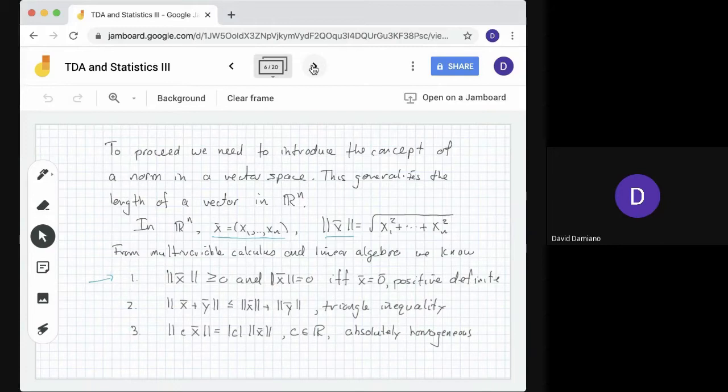From multivariable calculus and linear algebra, this length function satisfies three properties: it's always ≥ 0 and equals zero if and only if x is the zero vector (positive definite); the triangle inequality ||x+y|| ≤ ||x|| + ||y||; and ||cx|| = |c|||x|| where c is a scalar (absolutely homogeneous, because c pulls out as absolute value).